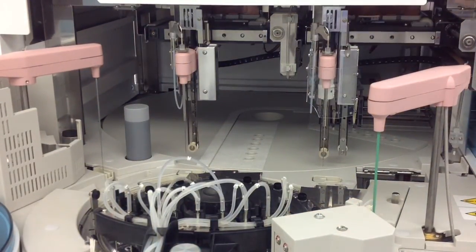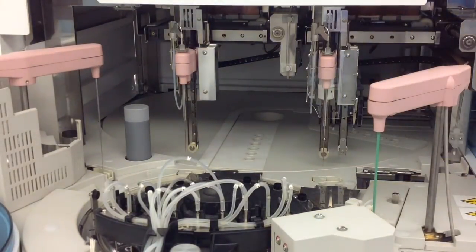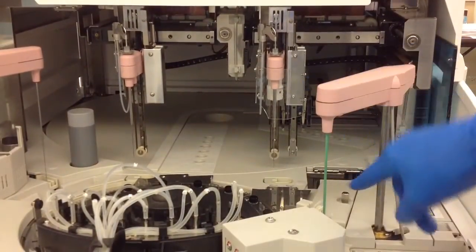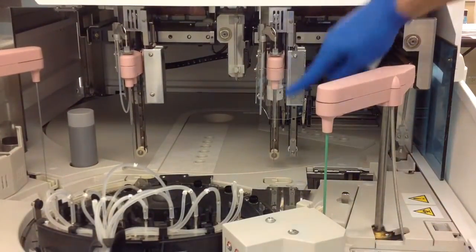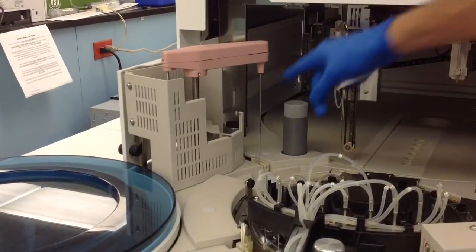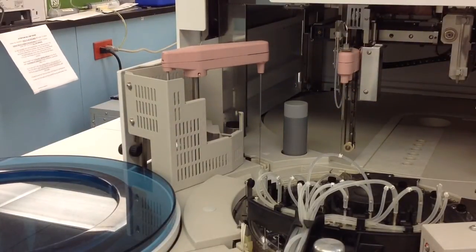Now the first thing you can go ahead and do is clean all the various probes with alcohol swabs, and that's going to be the ISE probe, the ISE sipper probe, the reagent probes, and the sample probe off to the left, and then there's a sample cover that you have to clean as well.